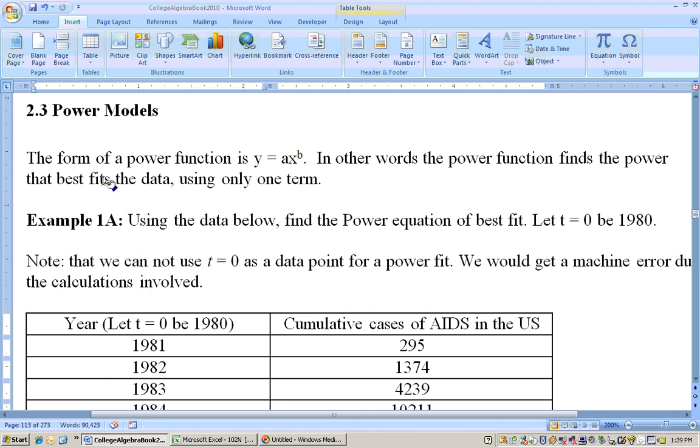This section is on power models, and the form of a power function is y equals ax to the b, so it's just a one-term expression. In other words, the power function finds the power that best fits the data using only one term. Now, you can always add terms to this and maybe say plus some number or whatever, and I'll show you that on the Excel sheet.